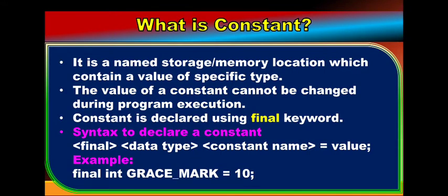Next is what is a constant. Like a variable, a constant is also a named storage or memory location which contains a value of a specific type, but the value of a constant cannot be changed during program execution. Constants are declared using the final keyword. Syntax: final data_type CONSTANT_NAME = value; Example: final int GRACE_MARK = 10; — now GRACE_MARK is a constant with value 10, and its value cannot be changed. One Java convention: constant names must be written in capital letters.